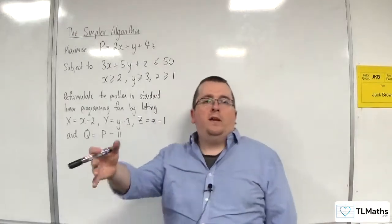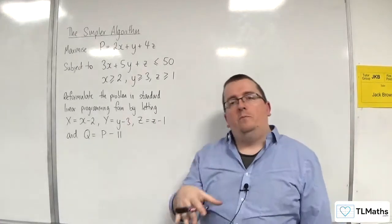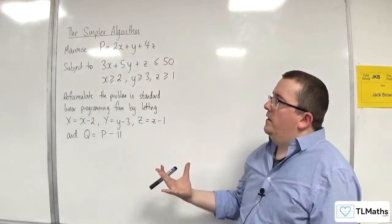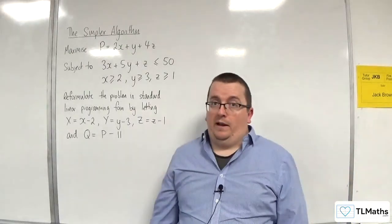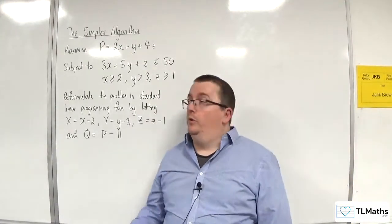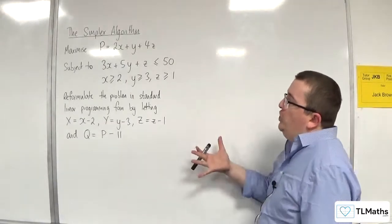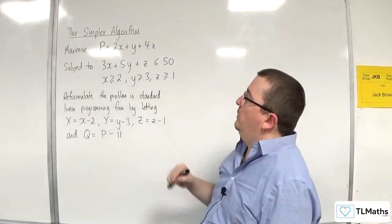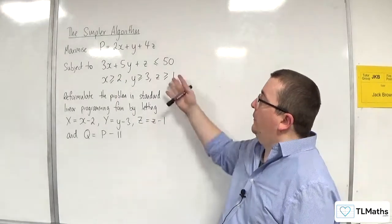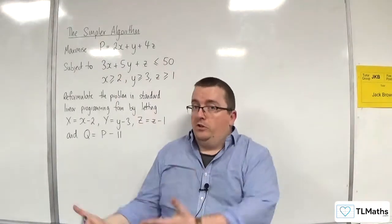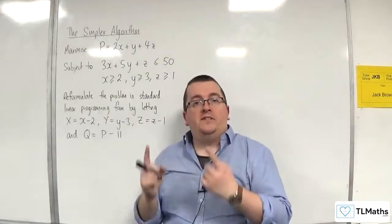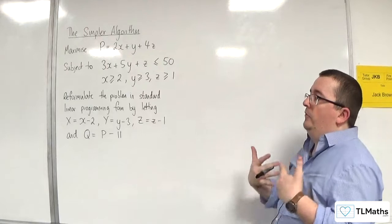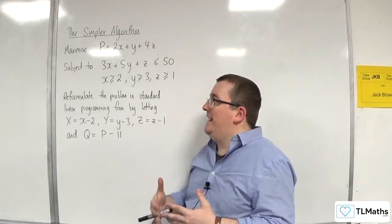In this video we're going to look at a peculiar type of problem where rather than go down the two-stage simplex route — which we could do, because the origin is not part of the feasible region since x ≥ 2, y ≥ 3, and z ≥ 1 — we are actually going to use some substitutions to deal with it instead.